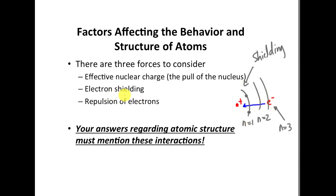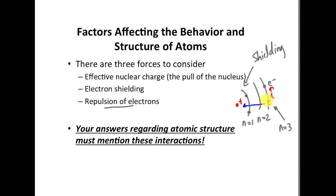Shielding also plays a role between S and P sublevels. Within the second energy level, the S sublevel can actually shield the P sublevel. Then there's the repulsion force, which applies in only three places: when you have electrons in the same orbital or same energy level. If I put another electron in that same orbital — an orbital being a region in space — those electrons are going to repel each other.